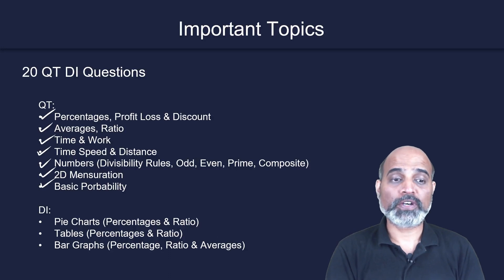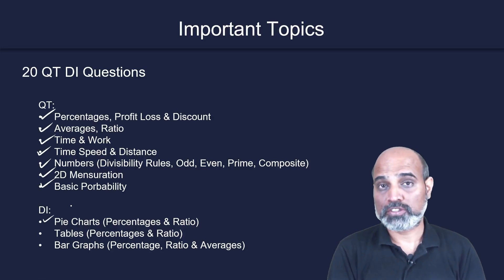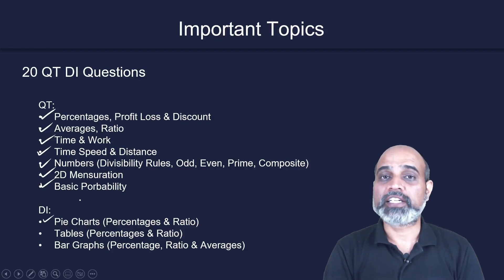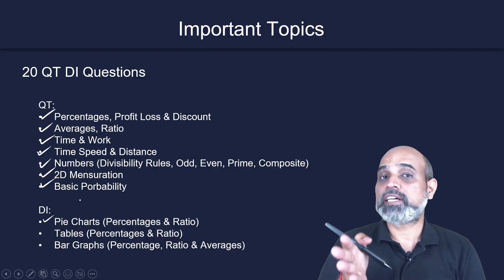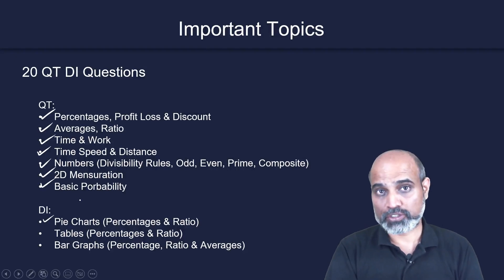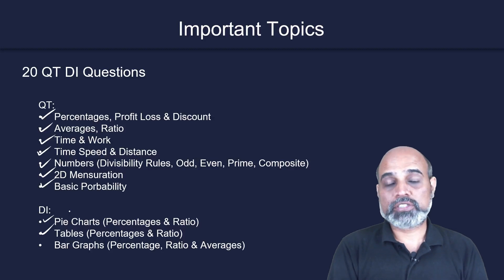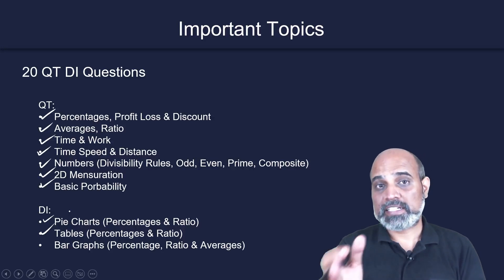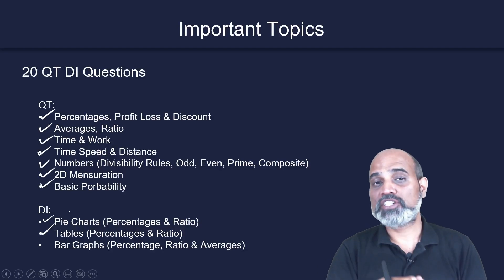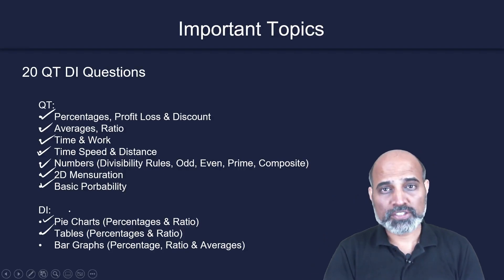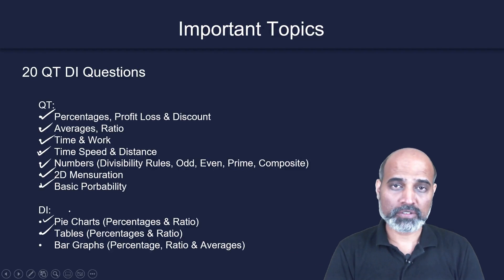The first DI type is pie charts — very important. Expect at least one set from pie charts, and within pie charts it has to do more with ratios and percentages concepts. Tables: expect at least one or two sets related to tables, which will consist of percentages, ratios, summation, differences of values, and overall values.